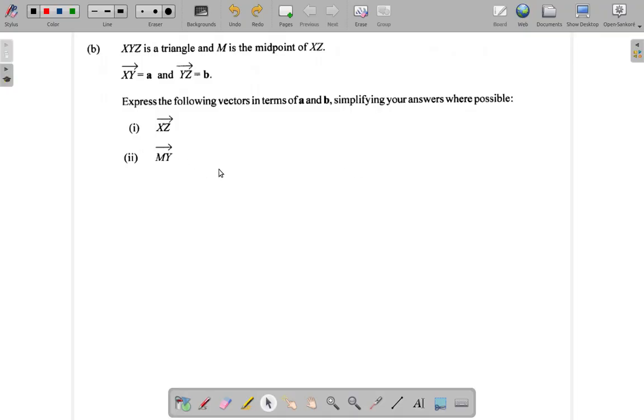Alright, I've copied the question here. Now XYZ is a triangle, M is the midpoint of XZ. First of all, let's make up a triangle so we can visualize what's happening here. Any triangle. If we need to adjust it later on, we can do that.